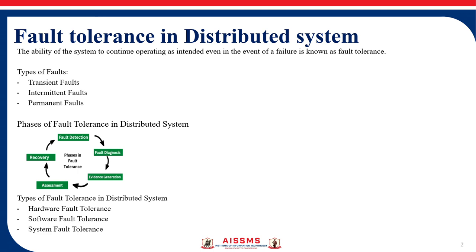Next we have the phases. Here you can see the diagram. First is fault detection, then diagnosis, evidence generation, assessment, and recovery. These are the phases of fault tolerance in distributed systems. There are also three types of fault tolerance: hardware, software, and system.